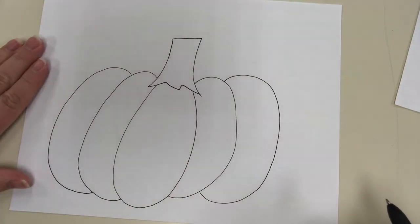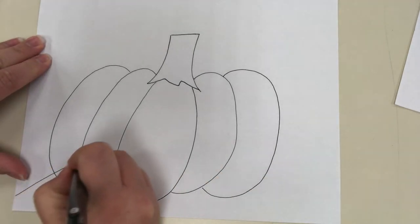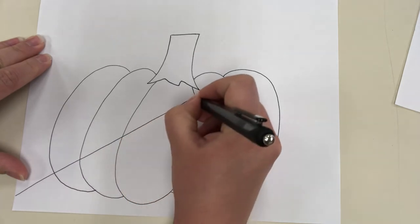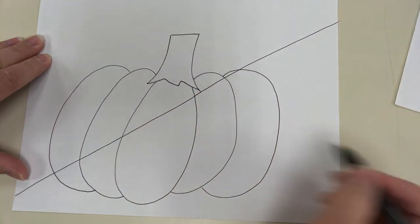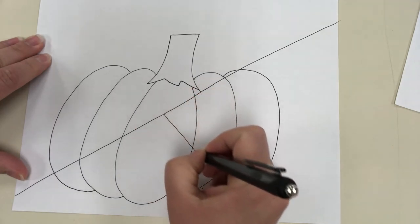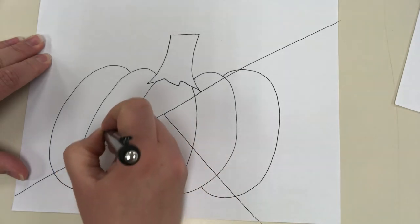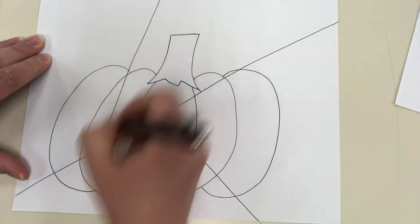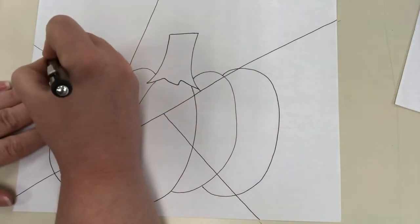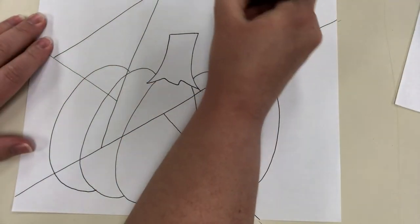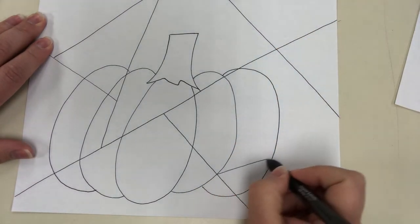So I'm gonna start by just drawing a line across here. Your lines don't have to be exactly where my lines are. And then I'm gonna draw a line kind of going from there, line across, and I'm gonna break up my picture into several panes to kind of start giving it a faux or kind of fake stained glass look.